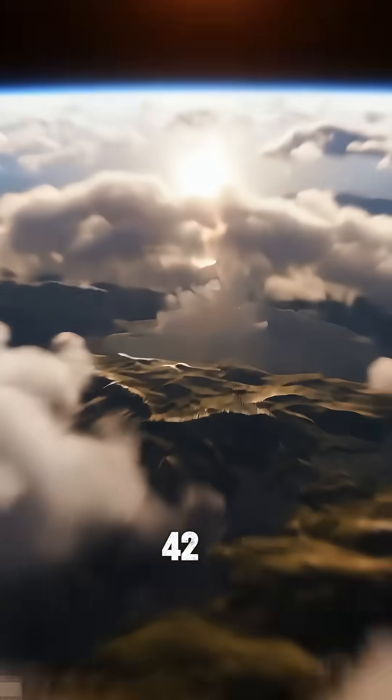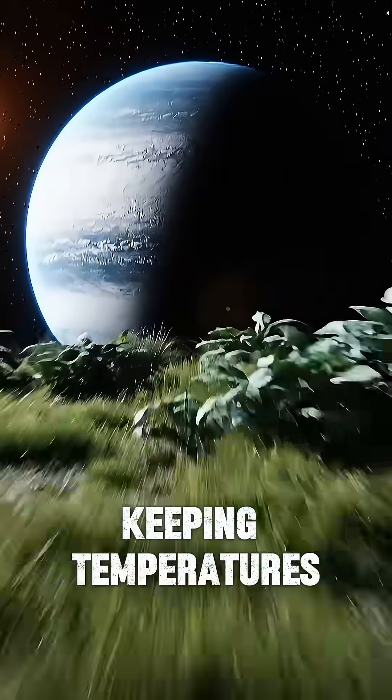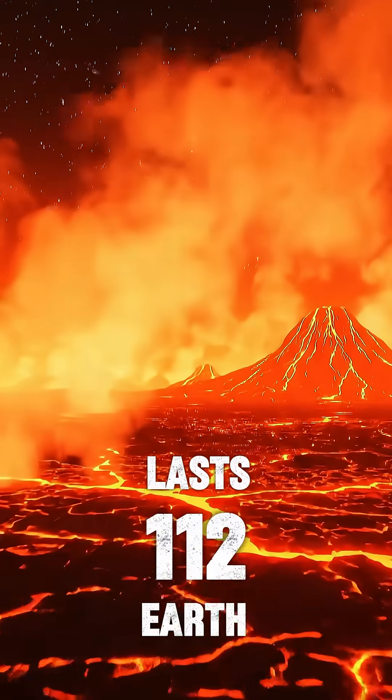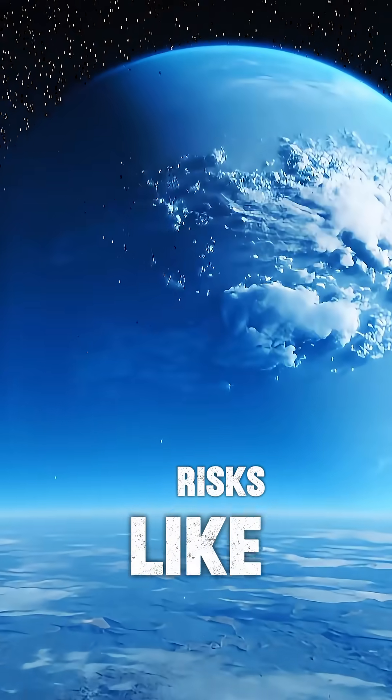Kepler-442b receives slightly less sunlight, keeping temperatures cooler and more stable. A year lasts 112 Earth days, reducing runaway greenhouse risks like on Venus.